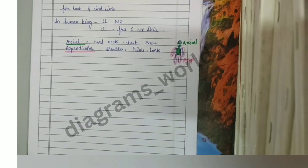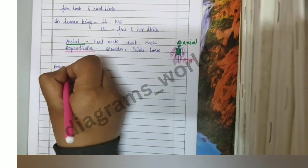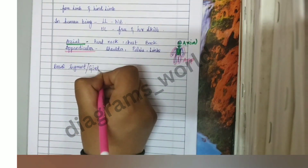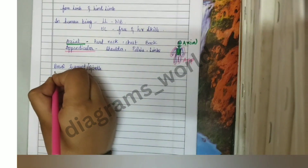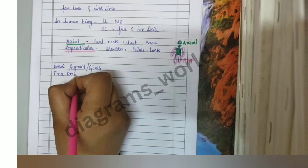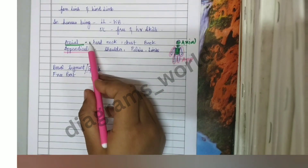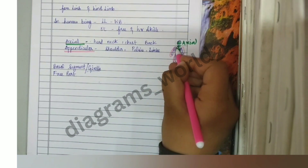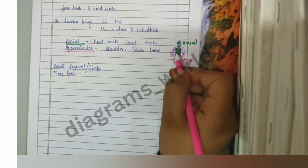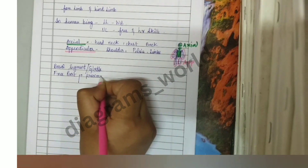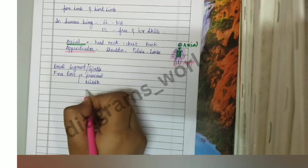Each limb, whether upper or lower, is made up on the same basic principles. First, every limb has a basal segment also known as the girdle, and a free part. The girdle attaches the appendicular skeleton to the axial skeleton. The free part is further divided into proximal, middle, and distal parts.